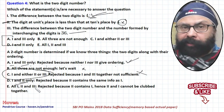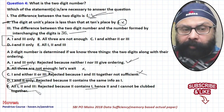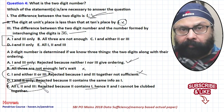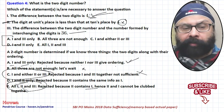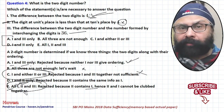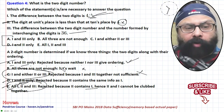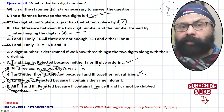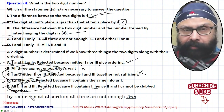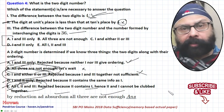All three statements are also rejected because statement 2 contains statement 1, so we cannot say all three are required. Options A, C, D, and E are all rejected, leaving only option B: all three are not enough. This is the correct answer by elimination.